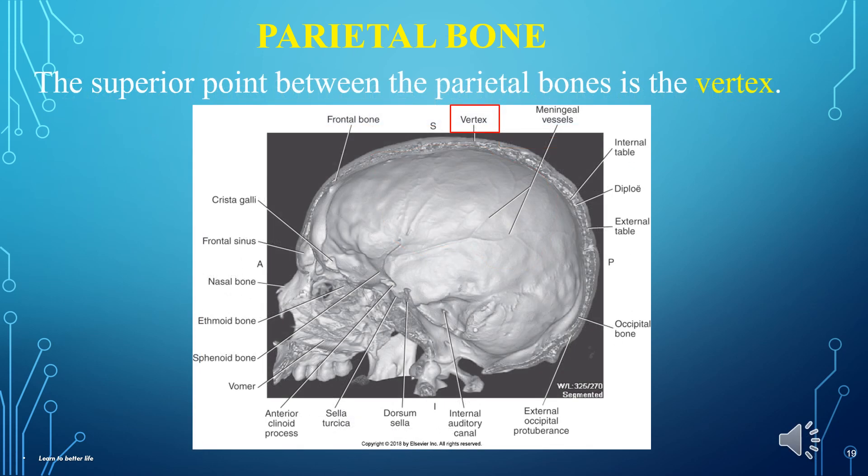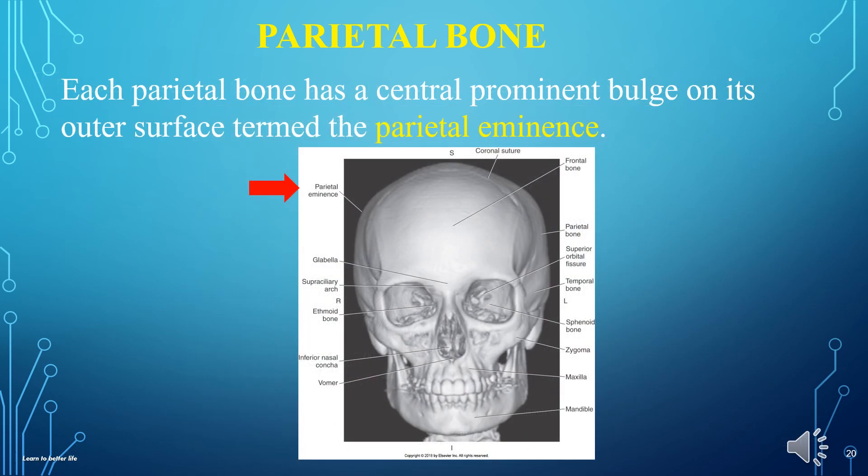Two parietal bones form a large portion of each side of the cranium. The superior point between the parietal bones is the vertex. Each parietal bone has a prominent central bulge on its outer surface termed the parietal eminence.